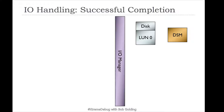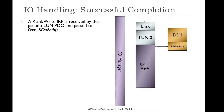As you can see in the slide, we have the IO manager and the disk being on zero in our DSM. The first step in handling an IO in MPIO is that a read/write IRP is received by the pseudo-LUN. The pseudo-LUN is the disk device which, on a non-MPIO configured system, the store port mini-port controller disk would receive the IO request. An IRP and SRB — storage request block — would be sent. Now the MPIO pseudo-LUN replaces this, and the MPIO pseudo-LUN along with the DSM controls all paths going through the same LUN.